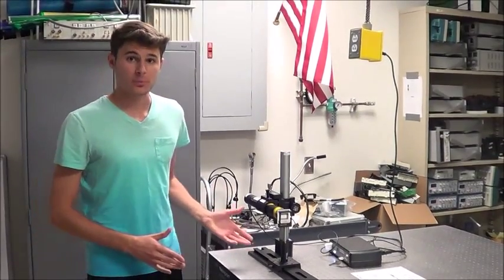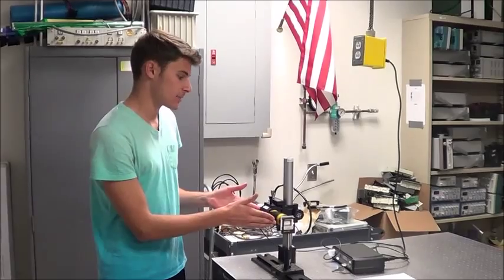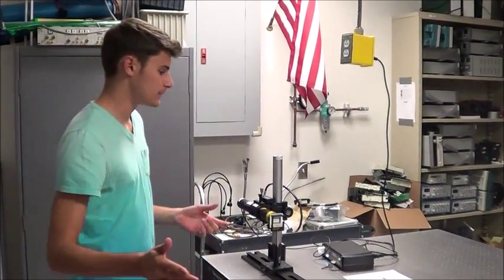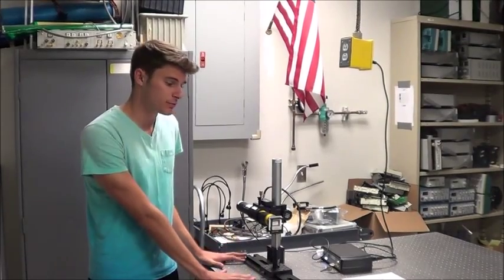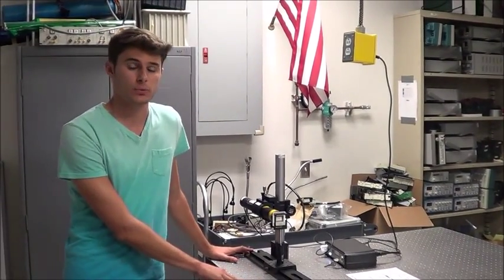This is the Young's double slit interferometer experiment. A red HeNe laser is passing through a double slit aperture and projecting an interference pattern onto a ruler at the end of the table. The fringes are created by the interference between two cylindrical waves created by the laser passing through the slits.